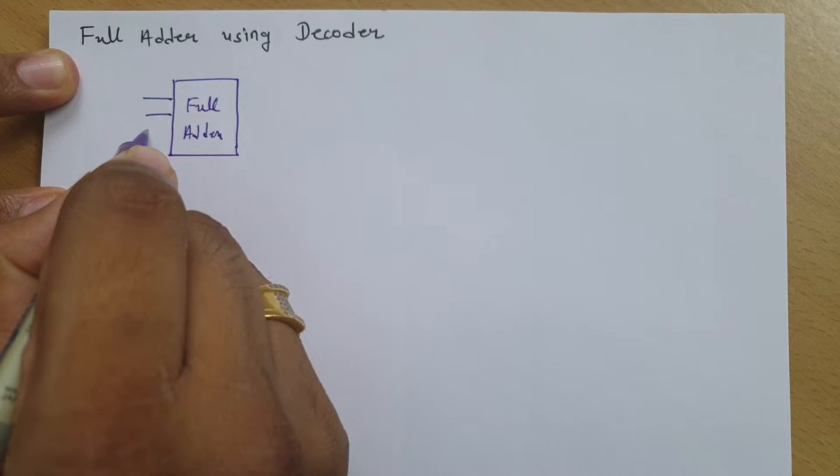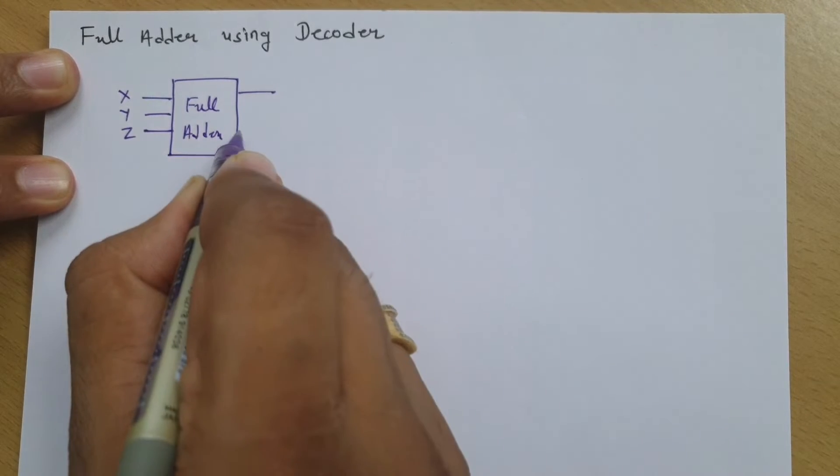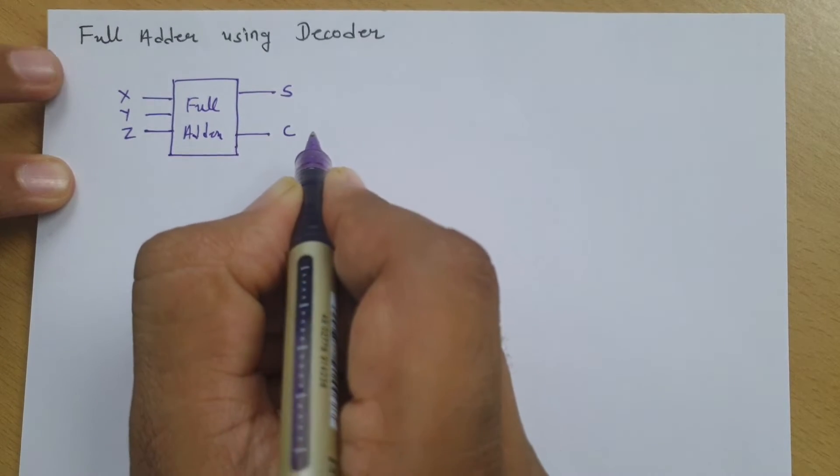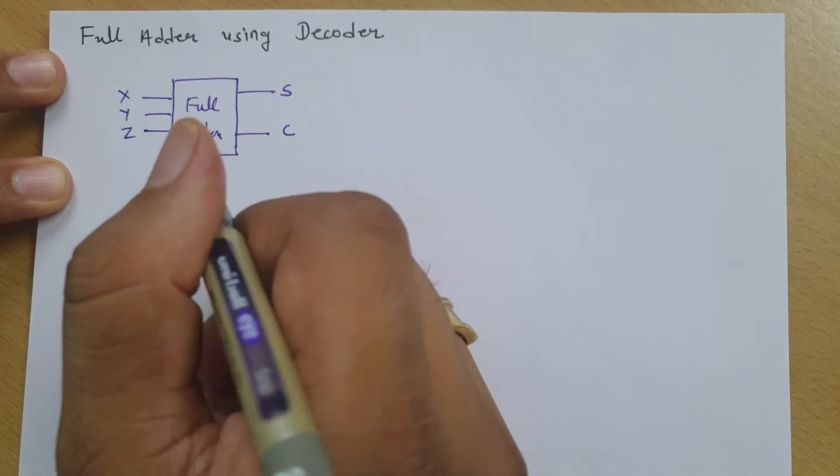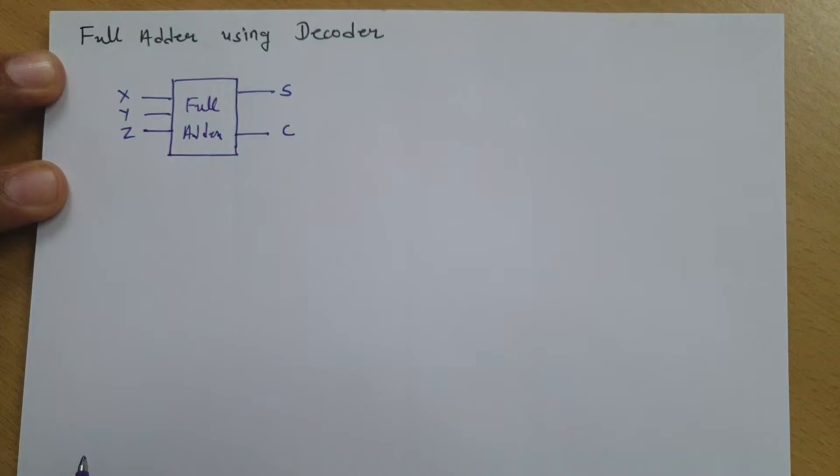Then we have two outputs. One is sum and one is carry. So here by using decoder, we are going to implement this full adder.